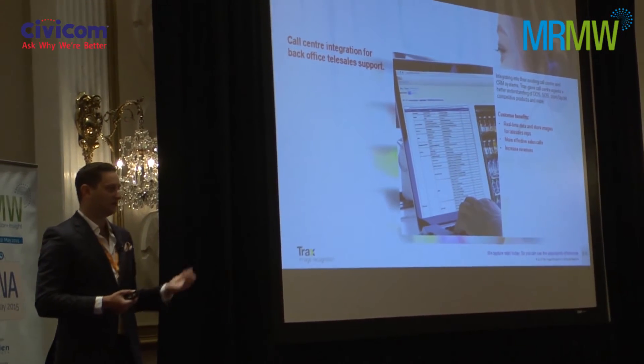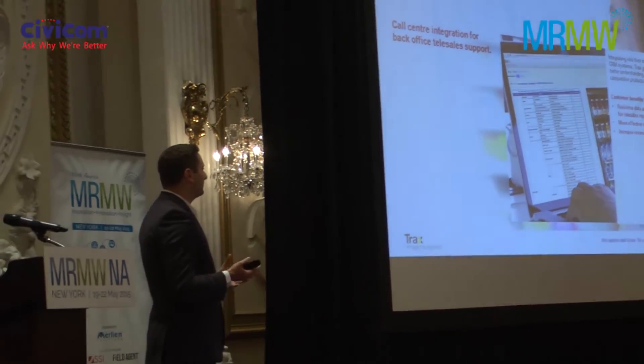One example of how we do this is by integrating this information into a contact center or call center. A trend we've seen is that many companies are moving towards engaging with customers through call centers or online applications for placing orders. The challenge is that the person managing the customer relationship is one step removed — they're not in the store, not engaging directly on a personal level, so it becomes a very dry interaction. But we've been able to provide these agents with real insights from the store — a real-time understanding of how their category is behaving and what opportunities exist.